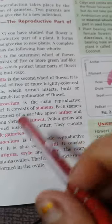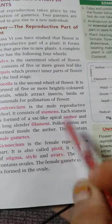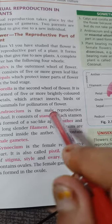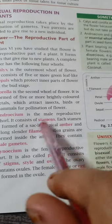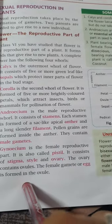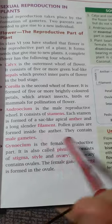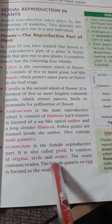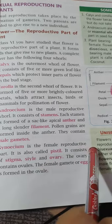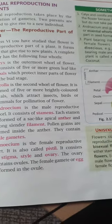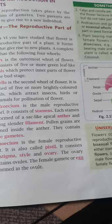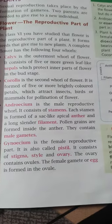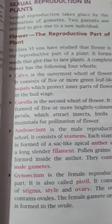Another name of gynoecium is pistil. Another name of androecium is stamen, which consists of two parts: anther and filament. Gynoecium, whose other name is pistil, consists of three parts: stigma, style, and ovary. This ovary contains ovules, and the female gamete or egg is formed in the ovule.